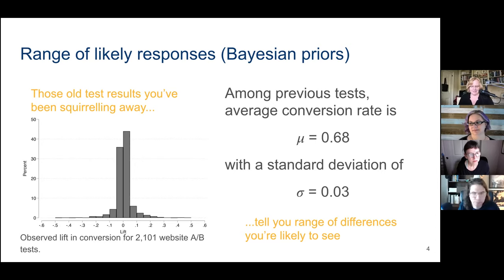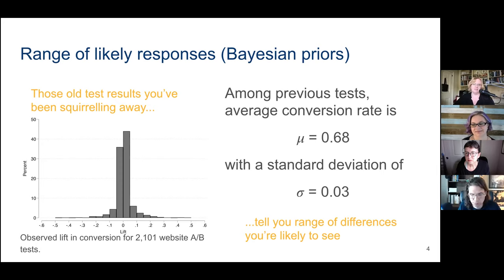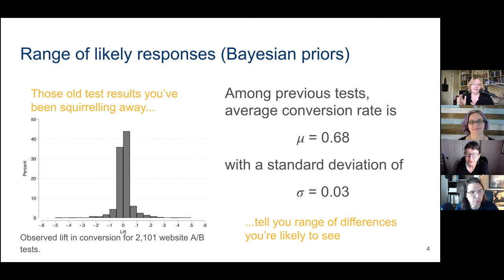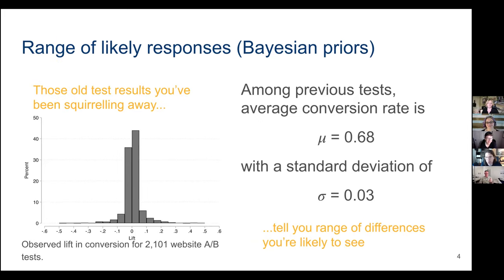Old test results you've been squirreling away can give you information about the range of differences you're likely to see. I have a student working at a startup who used a couple hundred newsletters with A/B tests on subject lines to start his process. Does this feel about right — that most A/B tests show no result, with just a few winners on the tails? That's what we typically see.